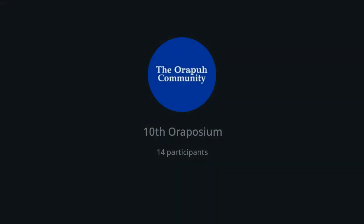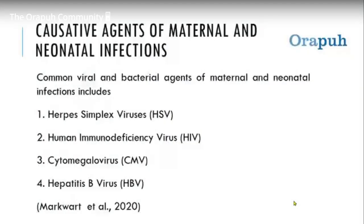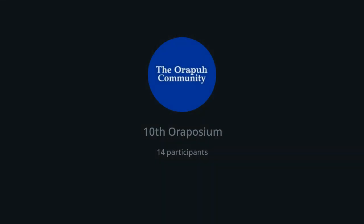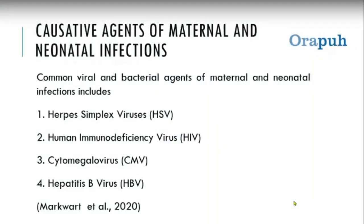Number two: human immunodeficiency virus (HIV). This is no longer a new virus; it is widespread, and every mother who has this virus tends to transmit it to the child if proper care is not taken. Number three: cytomegalovirus (CMV), which is similar to HSV. It often presents as measles in the child. CMV does not normally show any signs in the carrier — it is only when the woman is pregnant that signs appear. Number four: hepatitis B virus, which causes jaundice in children and damages the liver.